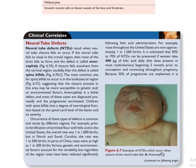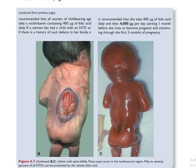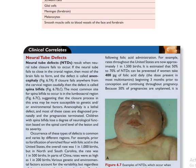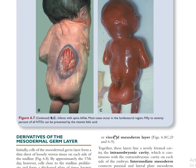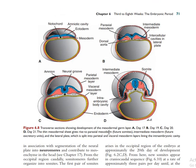Neural tube defects include anencephaly. Most neural tube defects can be treated or prevented when the mother is given folic acid. In spina bifida, the lower part of the neural tube has not enclosed — the blue portion has not closed.